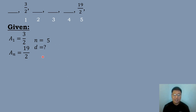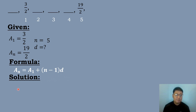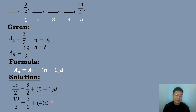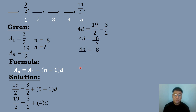We compute for the common difference using the formula: a sub n equals a sub 1 plus quantity n minus 1 times d. Substituting: 19 over 2 equals 3 over 2 plus quantity 5 minus 1 times d, so 19 over 2 equals 3 over 2 plus 4d. Transposing 3 over 2: 4d equals 19 over 2 minus 3 over 2, which is 16 over 2, equaling 8. Dividing both sides by 4: d equals 2. So the common difference is 2.